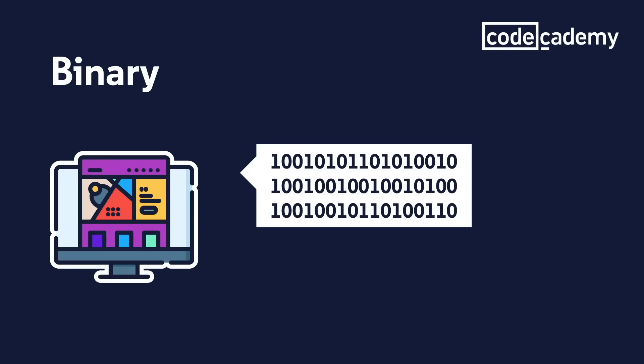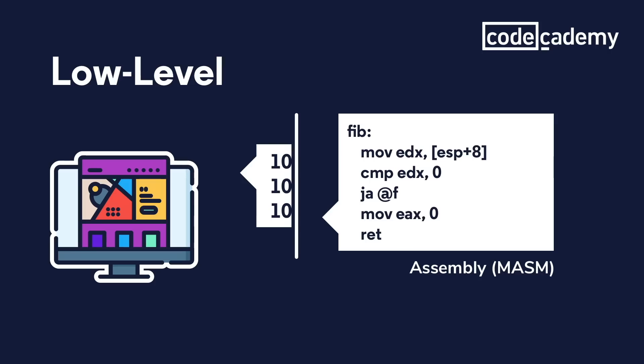At the end of the day, a computer only understands binary — meaning the ones and zeros. So no matter what the programming language is, it must eventually compile down to binary. The closer to a computer's native tongue, binary, the faster the language, because there's not as much need for translation. But it's also a lot harder to program at that level.